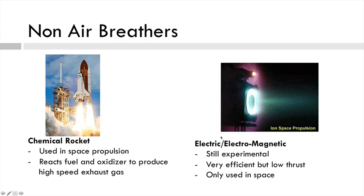Electric and electromagnetic propulsion systems look a little like something from science fiction, but they've been used on spacecraft for quite a while — they're actually quite an old system. They're still experimental and being improved, but they are very efficient. However, they produce very low thrust — only fractions of a newton or a newton of thrust — so while chemical rockets are less efficient, they produce a huge amount of thrust by comparison. Electric and electromagnetic systems are usually only used in space.